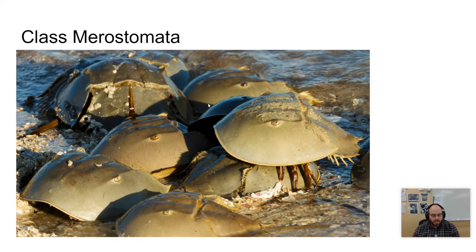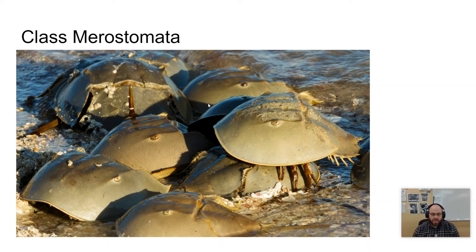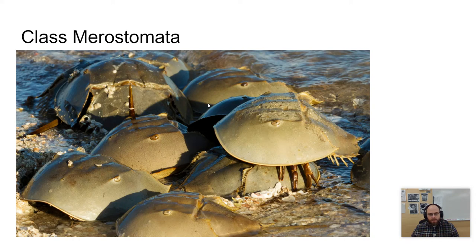The first class is Merostomata — horseshoe crabs. This group contains many extinct members, but horseshoe crabs are often called living fossils because they retain many primitive features. They are pretty much unchanged from the Jurassic period and live mostly in shallow water along coastlines. You may see a dead one or a live one — just leave them alone.